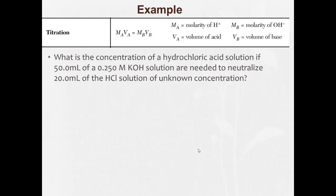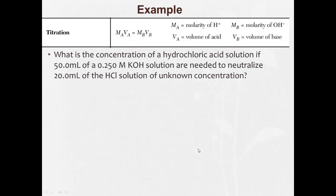All right, I'll do another example. Pay close attention to this so we don't have to spend so much time in class going over these. What is the concentration of a hydrochloric acid solution if the 50 milliliters, all right, so let's write this out. MAVA equals MBVB. MA equals, VA equals, MB, VB. 50.0 milliliters of potassium hydroxide, so that's my base. 50.0 milliliters of 0.250 molar, so 0.250 molar. Needed to neutralize 20 milliliters, so 20.0 ml. And we're looking for the molarity of the acid.